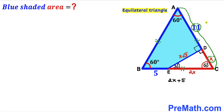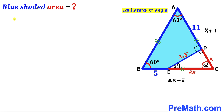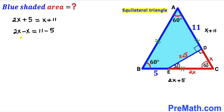Similarly, side AC is going to be x plus 11, so AC = x + 11. Since triangle ABC is equilateral, side BC equals side AC, giving us 2x + 5 = x + 11. Moving x to the left and 5 to the right, we get x = 6 units.